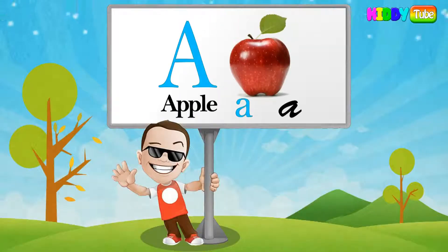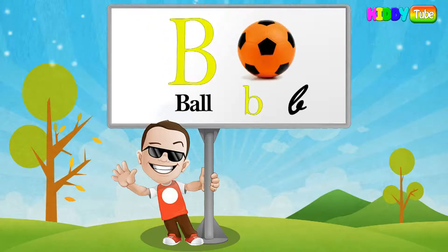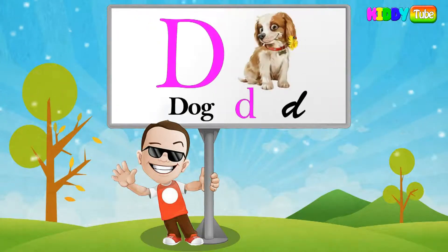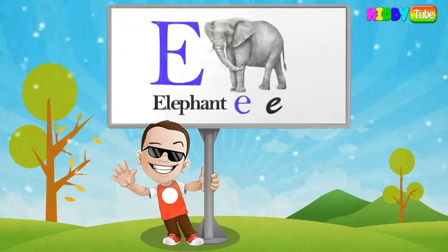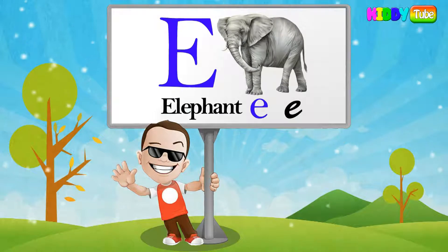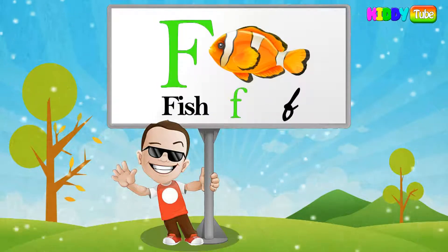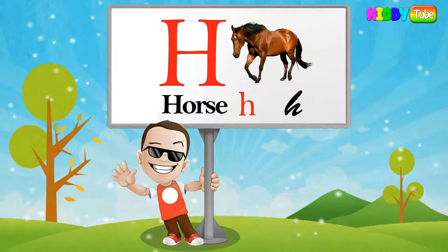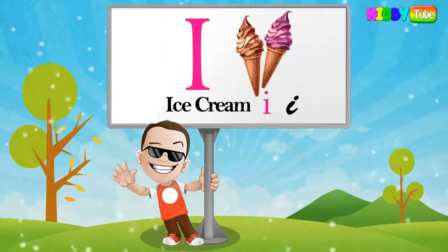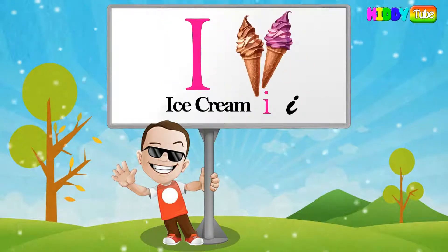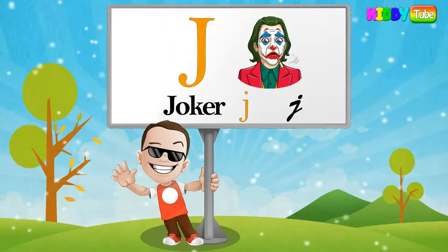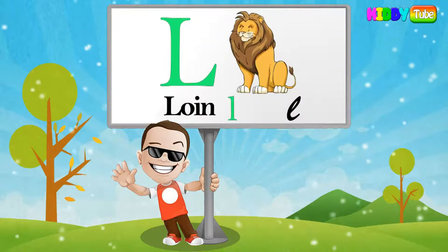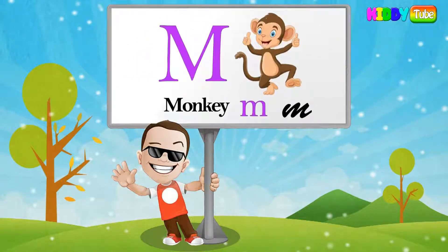A for apple, B for ball, C for cat, D for dog, E for elephant, F for fish, G for goat, H for horse, I for ice cream, J for joker, K for kite, L for lion, M for monkey.